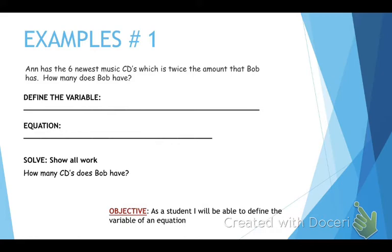So we're doing basically the same thing, only this is a little bit different, because remember, an equation has an equal sign. And remember, any time that you're writing an equation, you should have some sort of variable. Okay, so we're going to go ahead and get started. It says Anna has six newest music CDs, so we know that Anna has six. Which is twice the amount. Twice means multiply. What are you going to multiply? Well, you're multiplying the amount that Bob has. And that is really your equation.